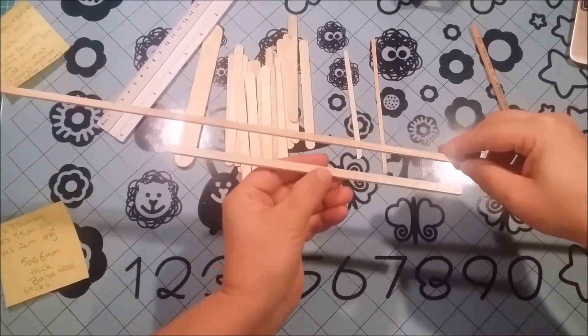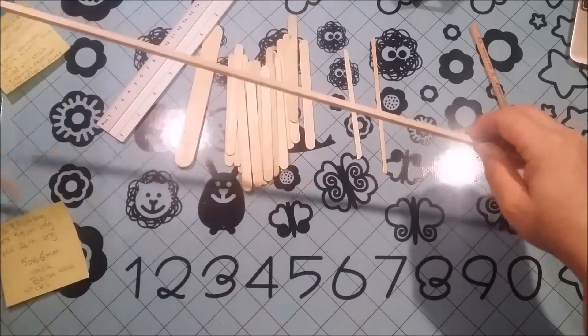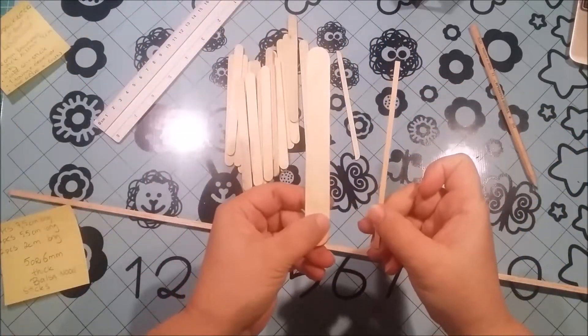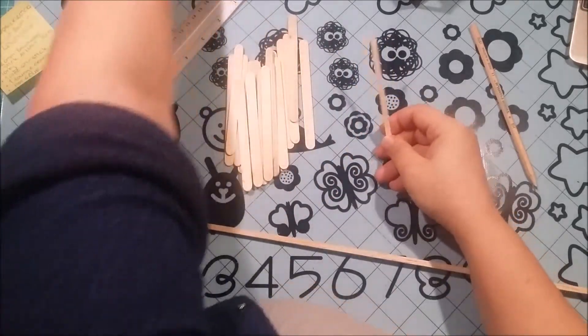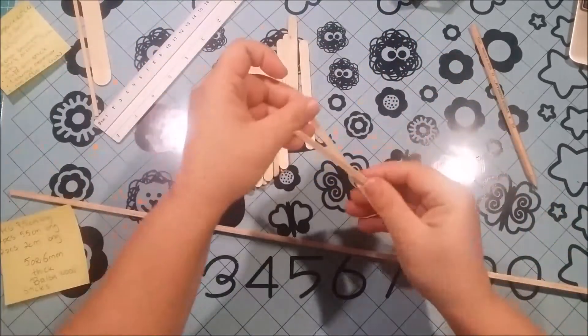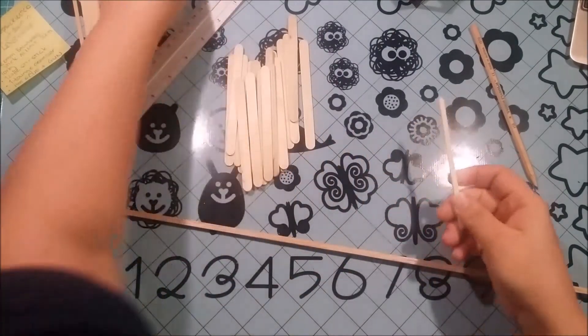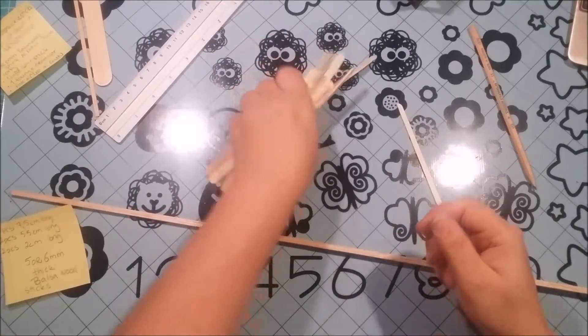Here I'm showing you, we're going to need some balsa wood, 5mm, 6mm will do but the measurements will be different. Tongue depressor, a coffee stir stick, a popsicle stick cut in half lengthwise and we're going to need some popsicle sticks.